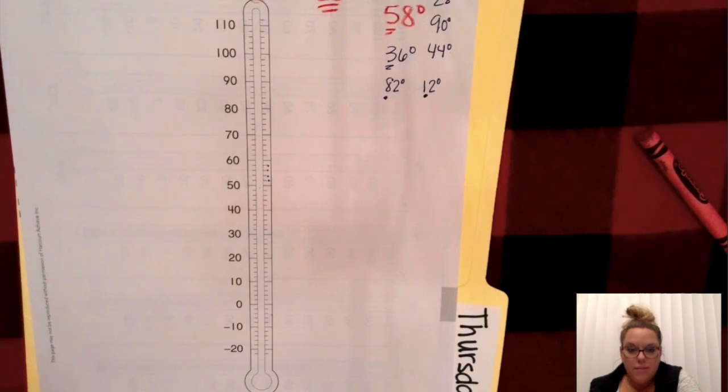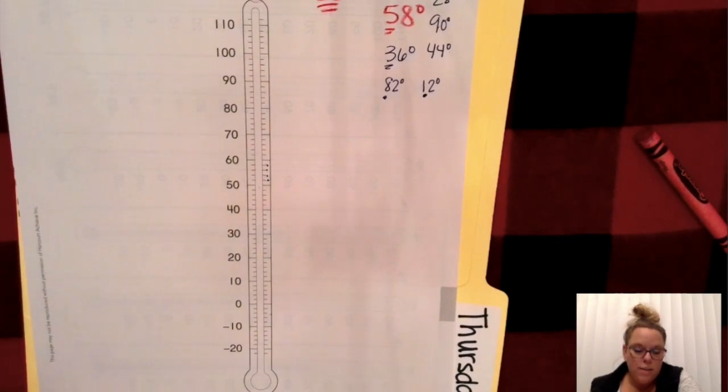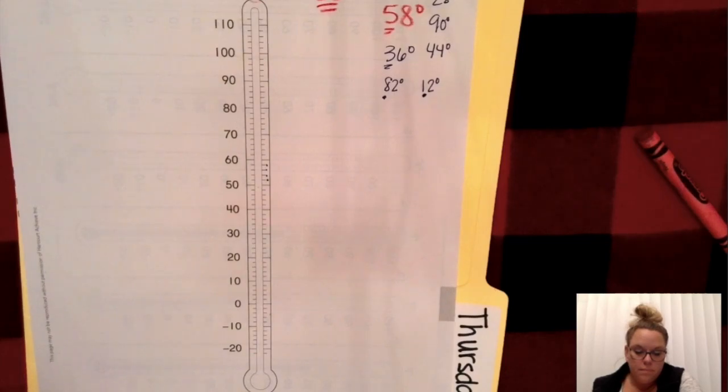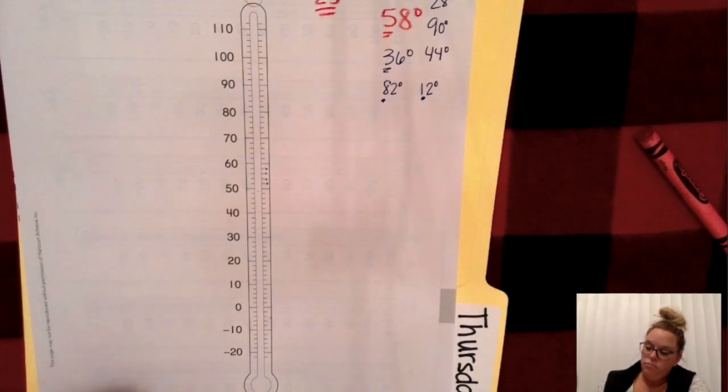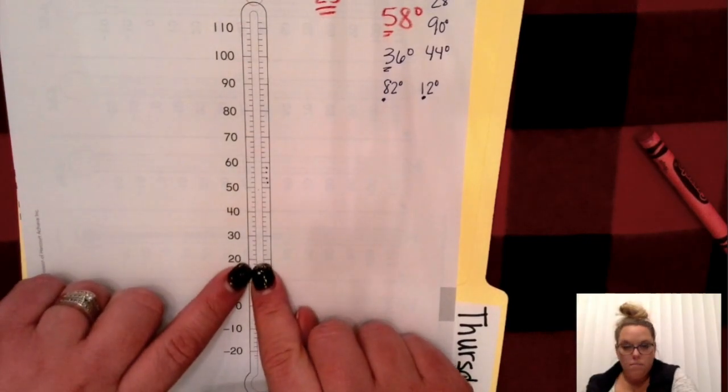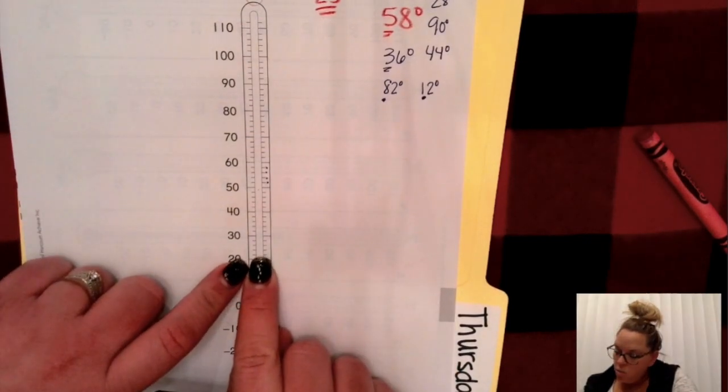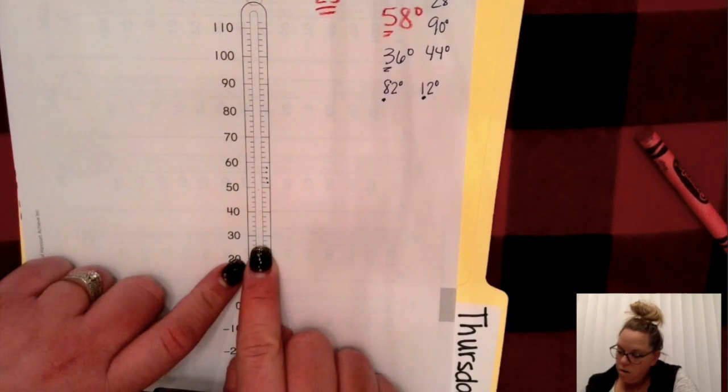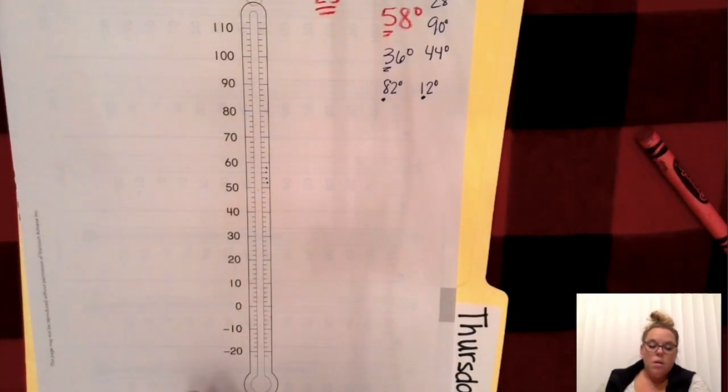And what about 28? 28 degrees. Find it, point to it. Where's 28 degrees? 20. Now, let's count it by two: 22, 24, 26, 28.